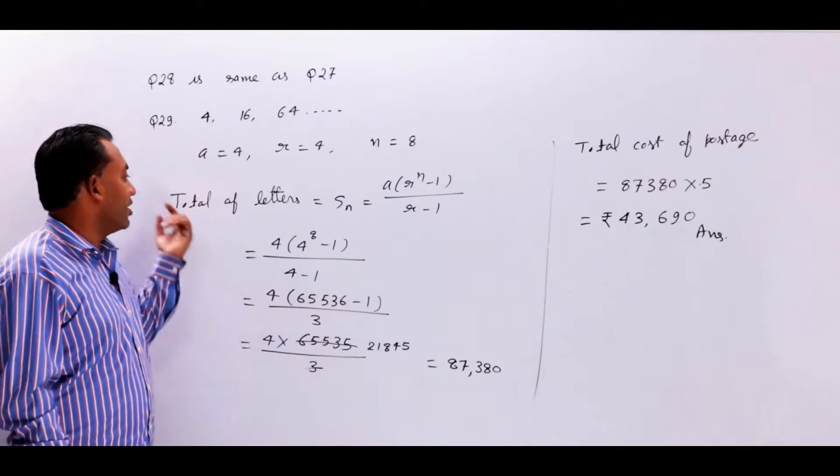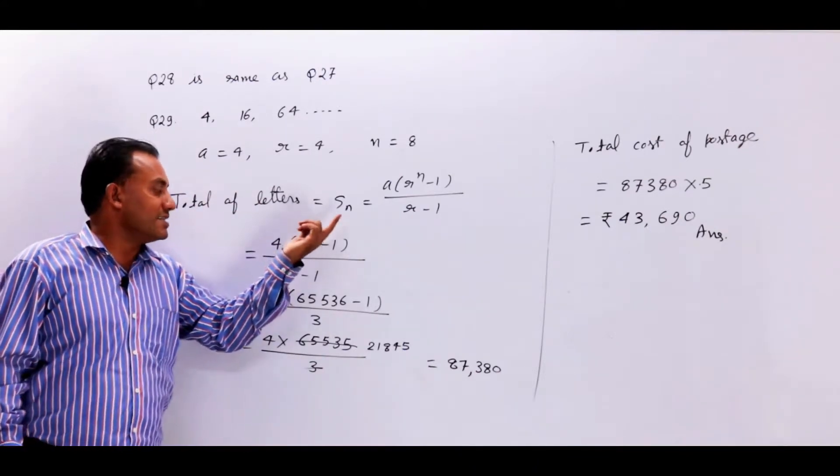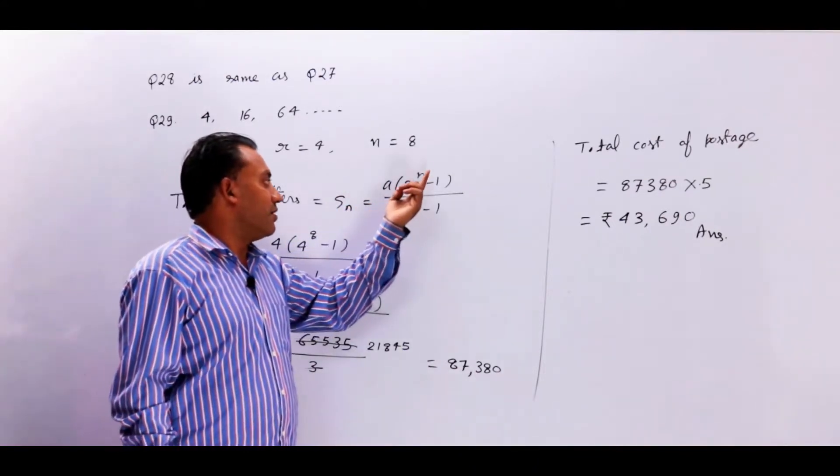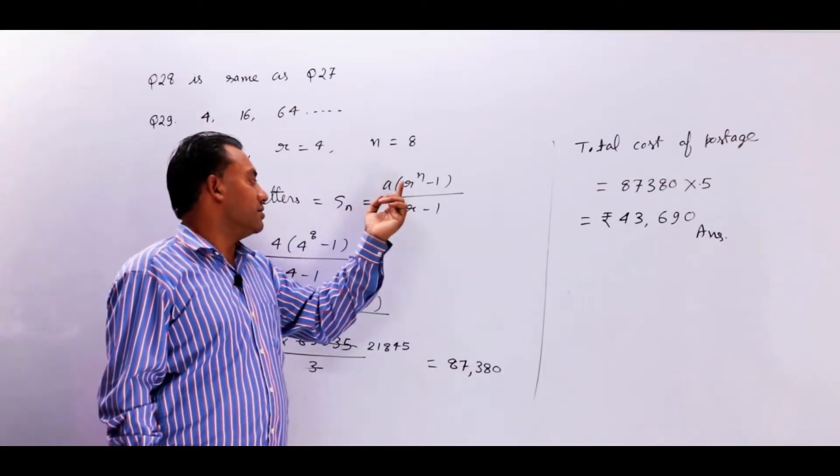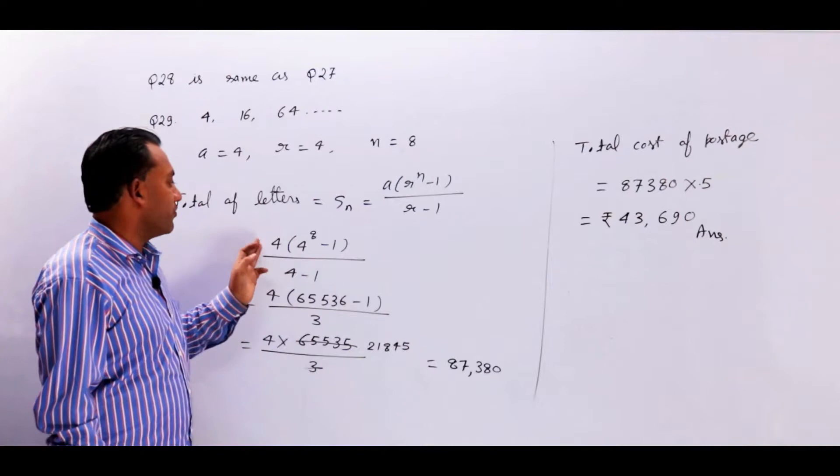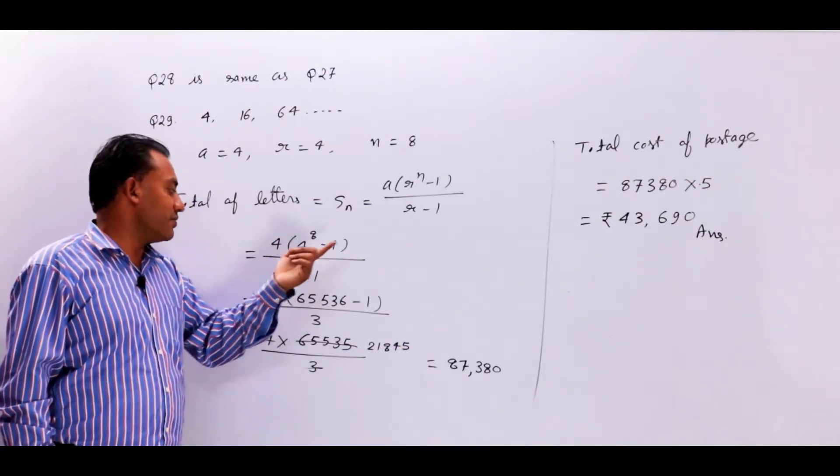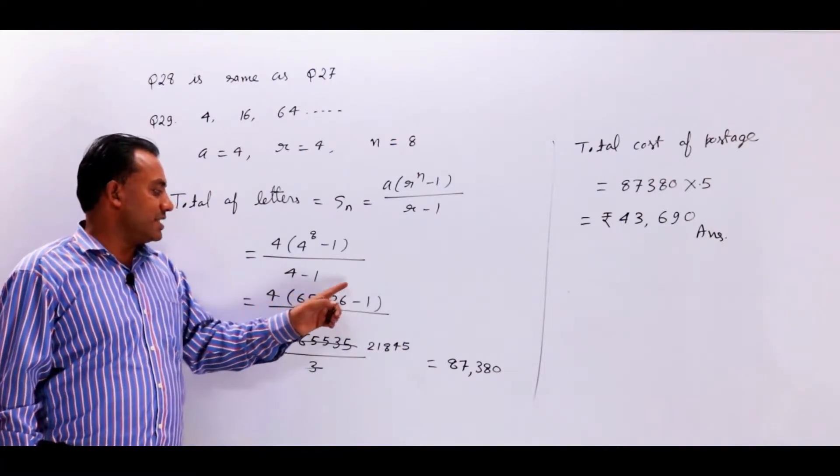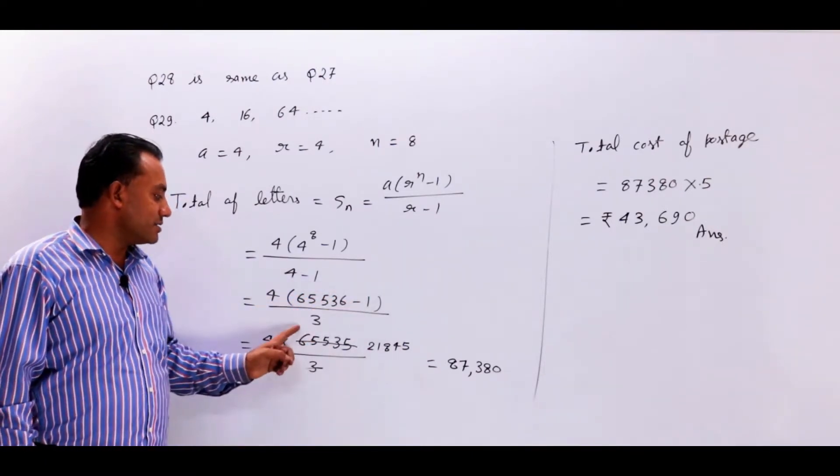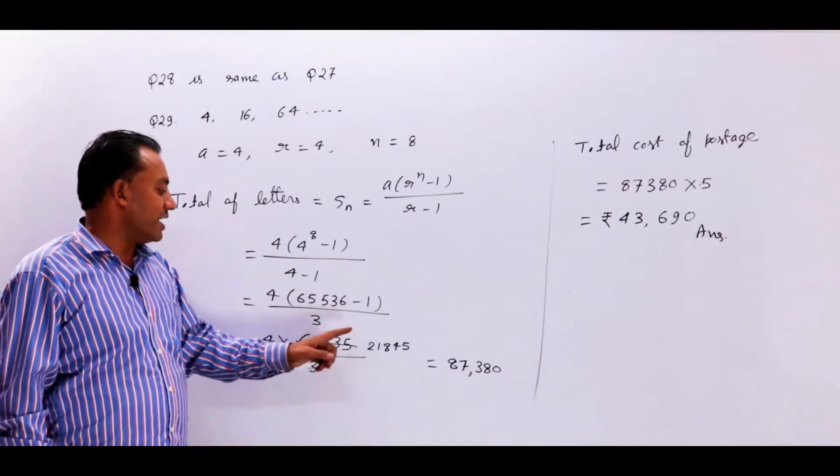Now we have to know that total number of letters is Sn equal to a times r to the power n minus 1 upon r minus 1. 4 times r to the power n minus 1 upon 4 minus 1. 4 to the power 8 is equal to 65,536, minus 1 is equal to 65,535.